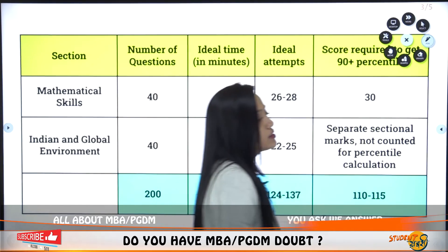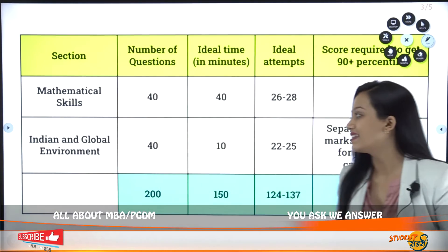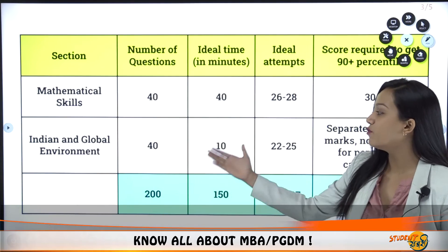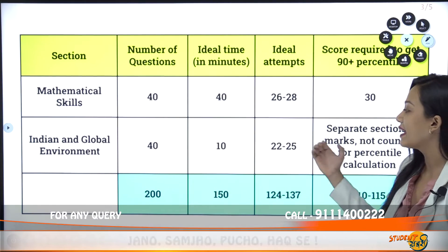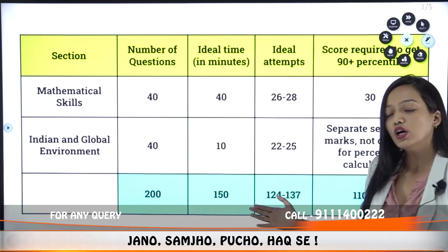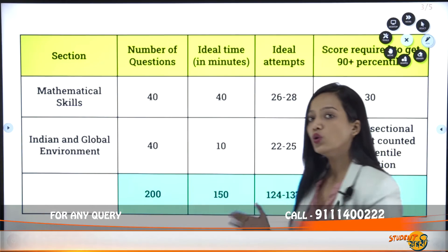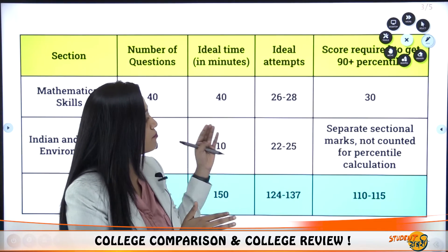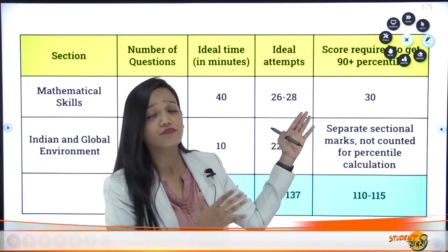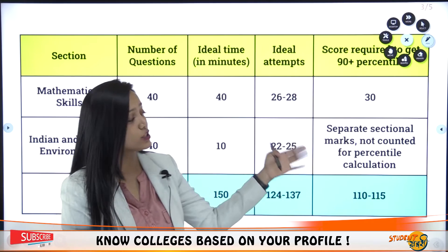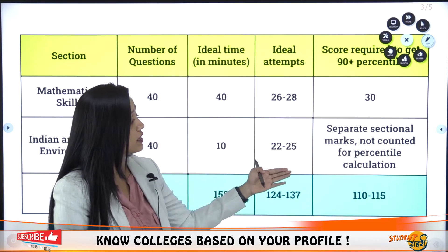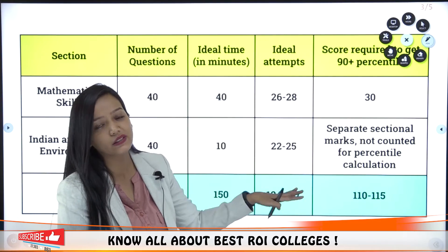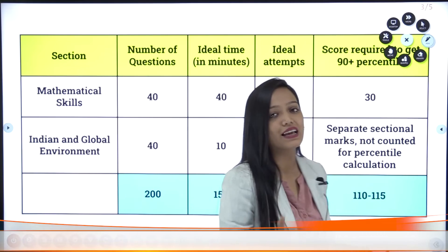Moving to the last section, Indian and Global Environment — 40 questions, 10 minutes time. The ideal attempts should be 22 to 25 questions. However, if we talk about the score required, separate sectional marks are not counted for the percentile calculation.